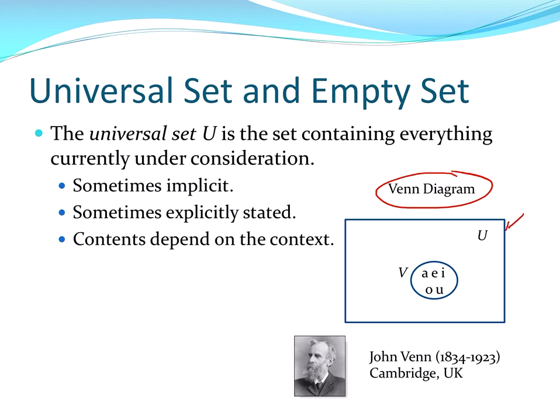And then the set in question would be a circled element inside the universal set. So here's the universal set. And everything happens inside of that. Here's the set of vowels. And what might U be? Well, you might be the set of all letters, set of all symbols, set of all things.